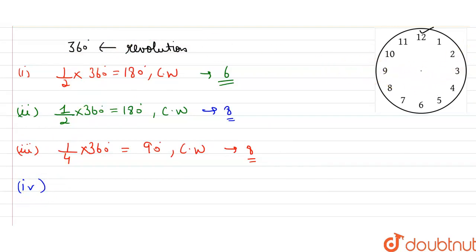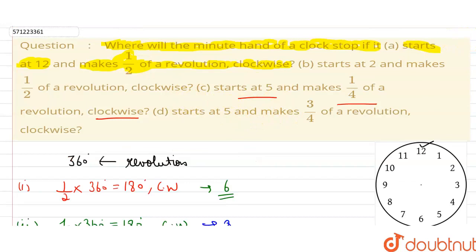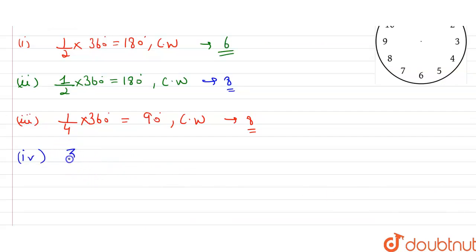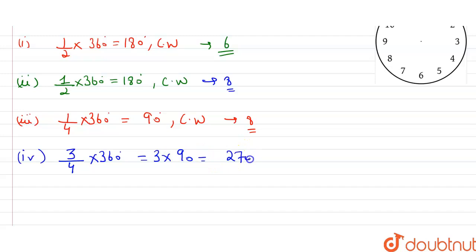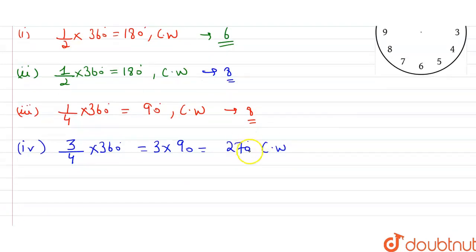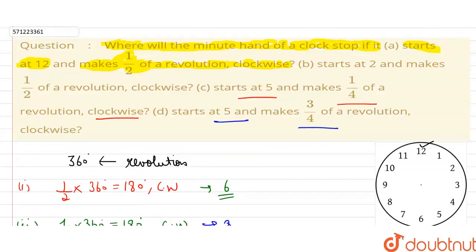For part 4, it starts at 5 and makes three-fourths of a revolution clockwise. Three-fourths of 360 degrees is 3 into 90 degrees, which equals 270 degrees clockwise.